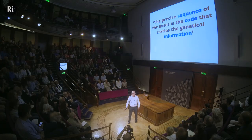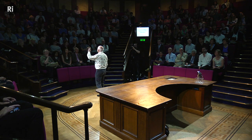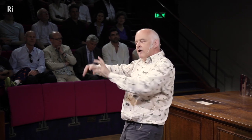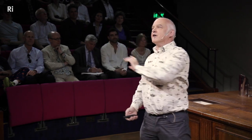Let's look at it again: it's the sequence of bases that is the code that carries the information. I'm going to look at each of those three things — sequence, code, and information — very briefly, and show you where the ideas came from and how Watson and Crick put them together. And then we'll look at what came after that great breakthrough.